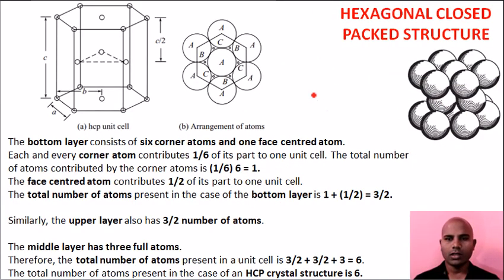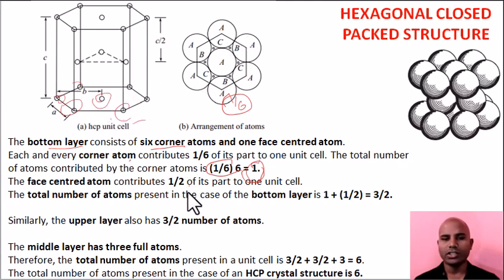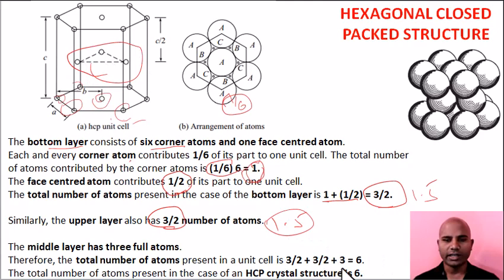Next is HCP crystal structure. In HCP, the bottom layer has 6 corner atoms — each contributing 1/6 to the unit cell: 6 × 1/6 = 1. The central atom of the bottom layer is shared, contributing 1/2. Top and bottom layers together give 3/2 + 3/2 = 3 atoms. The middle layer has 3 complete atoms. So total number of atoms in HCP = 6.